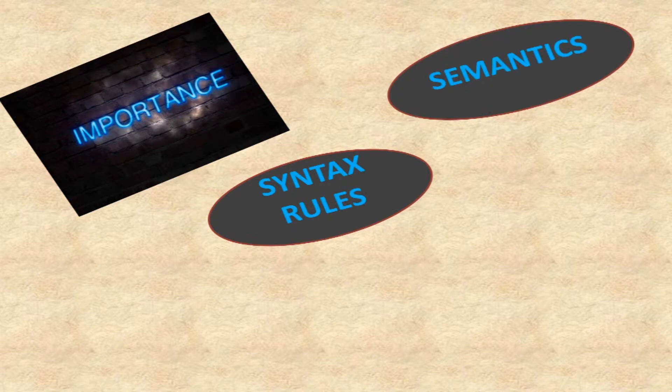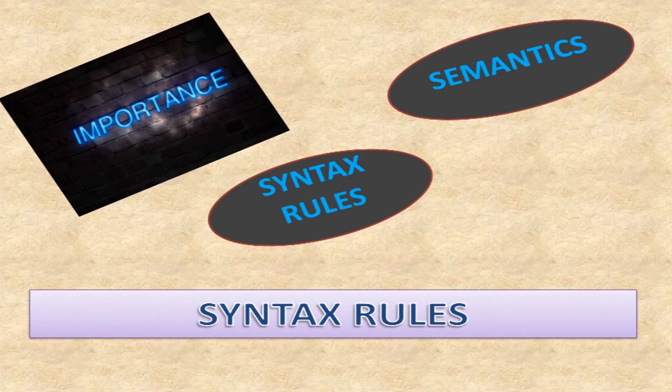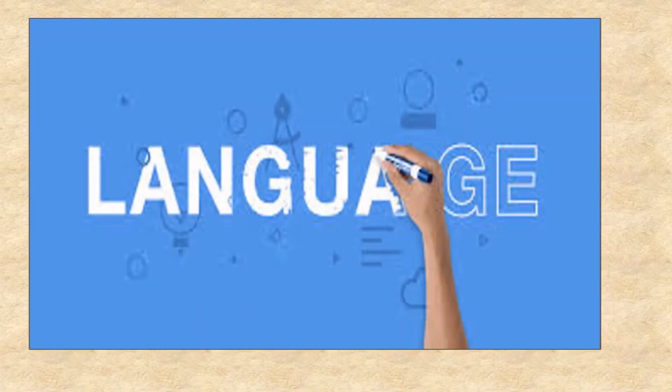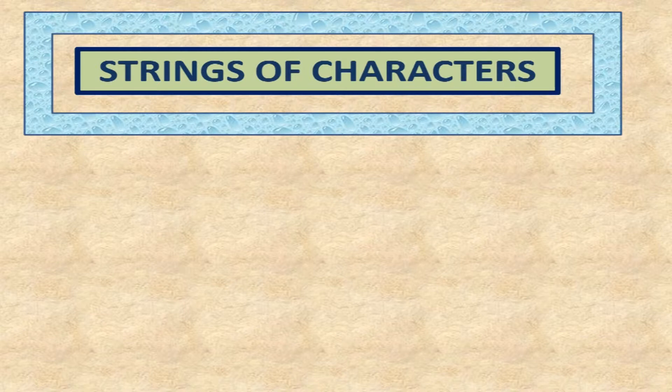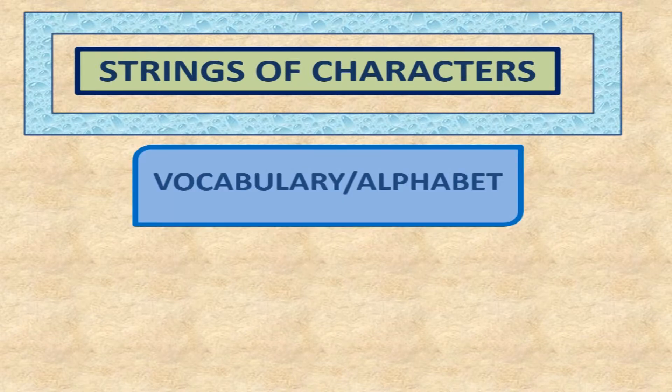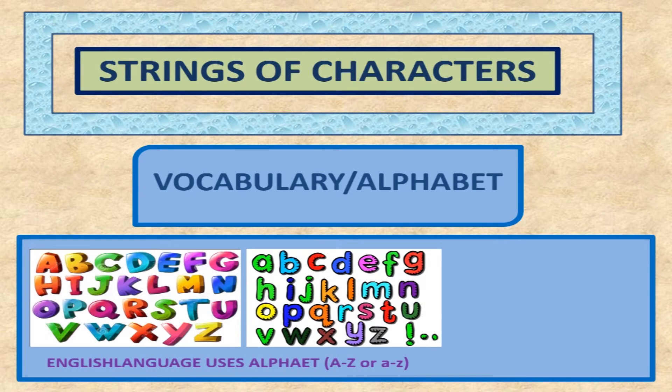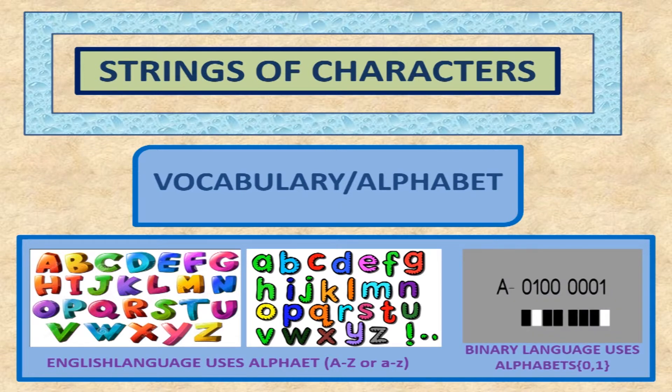First, let us discuss about syntax rules. A language is a collection of vast number of strings of characters which are chosen from a set called its vocabulary or alphabet. For example, English language uses alphabet ranging from small a to z or capital A to Z and binary language uses alphabets.